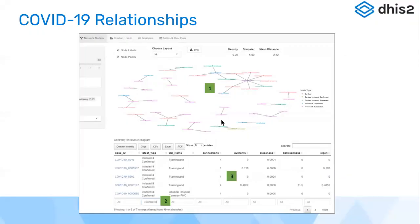COVID-19 relationships were of key importance — understanding the relationships between index cases and contacts. A couple of COVID-19 relationship apps were developed. One we'll see today was developed in collaboration with the University of Boston and Sri Lanka. Another was developed by the Norwegian Institute of Public Health, which uses R Shiny as a platform to generate network diagrams between the index cases and contacts.